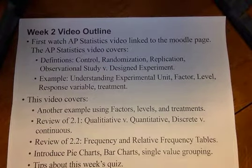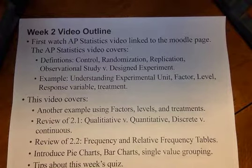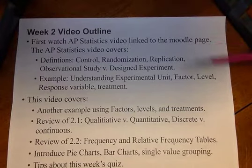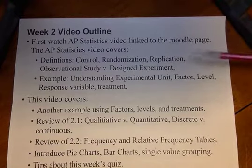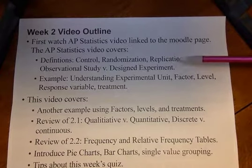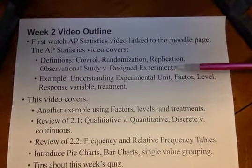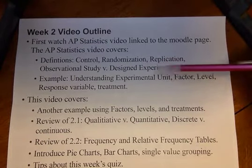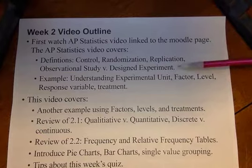Welcome to our second video for Math 220 Applied Statistics. In this video today, I want to go over a couple of things. First, I have about a five-minute-long video that I want you to watch that goes over some definitions. Those definitions include randomization, replication, control, and distinguishing an observational study from a designed experiment. A note on that video: they just call it an experiment, but your book calls it a designed experiment, so make sure you use the term 'designed experiment' for homework problems.